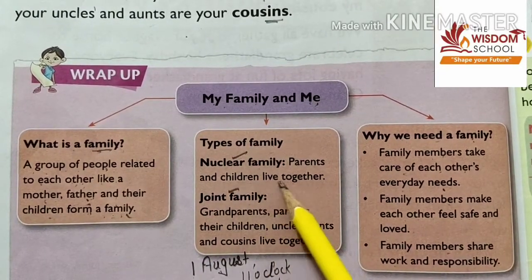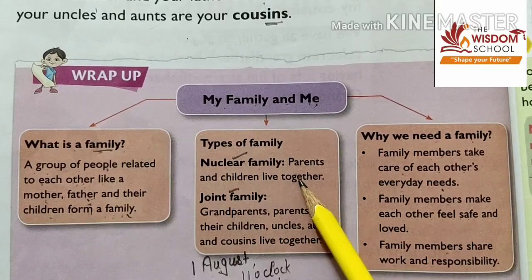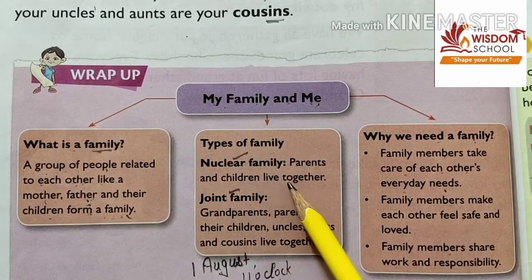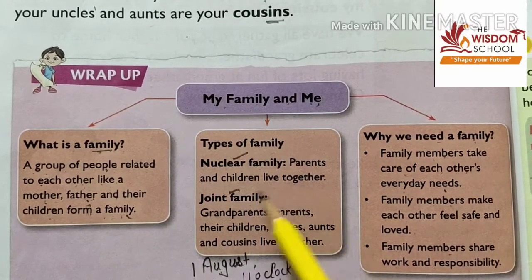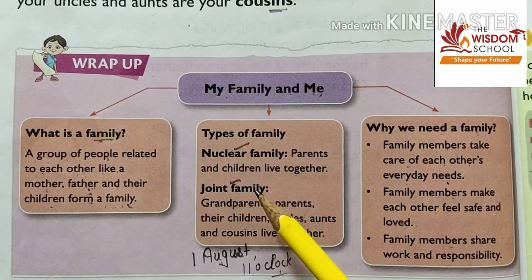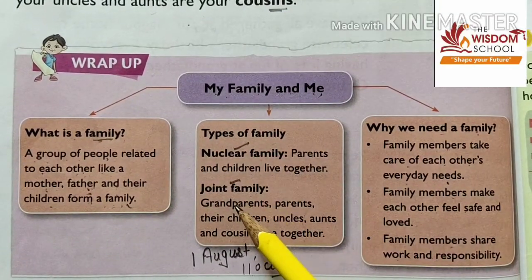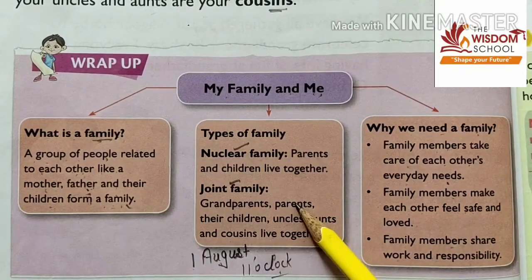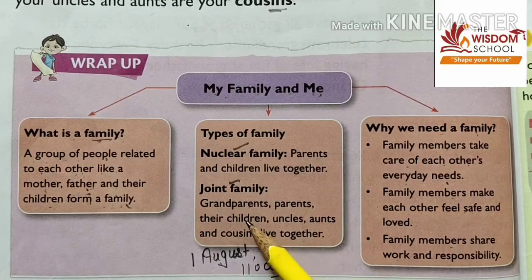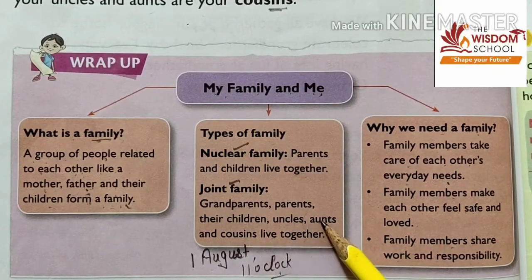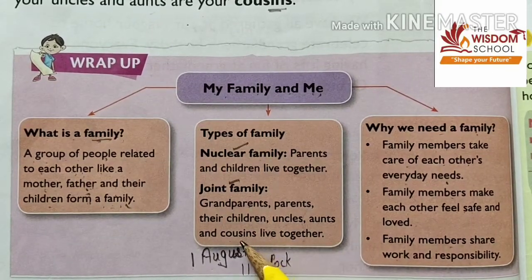Types of family: nuclear family and joint family. Nuclear family — parents and children live together. Joint family — grandparents, parents, children, uncles, aunts, and cousins all live together.